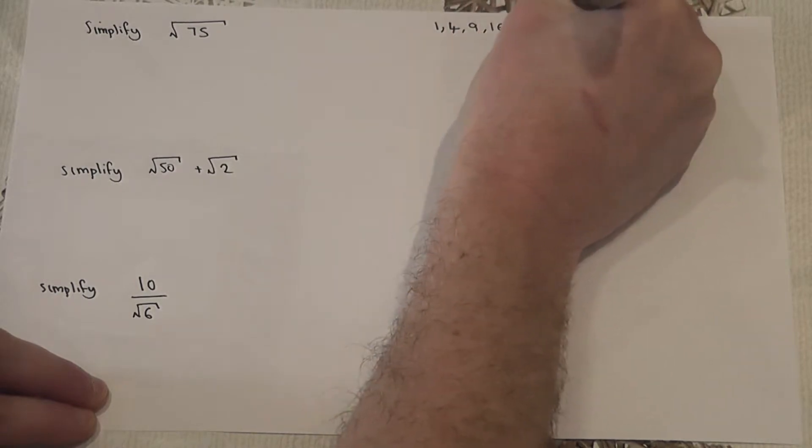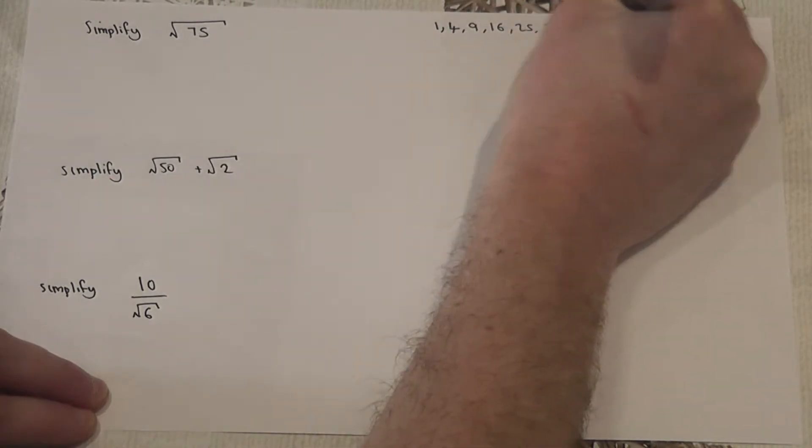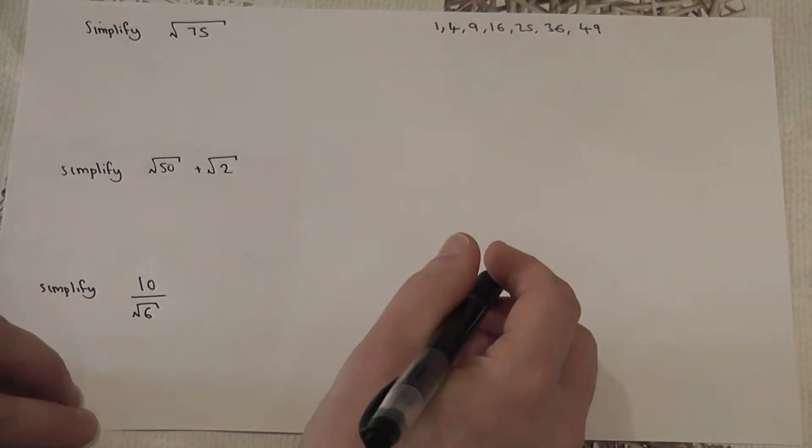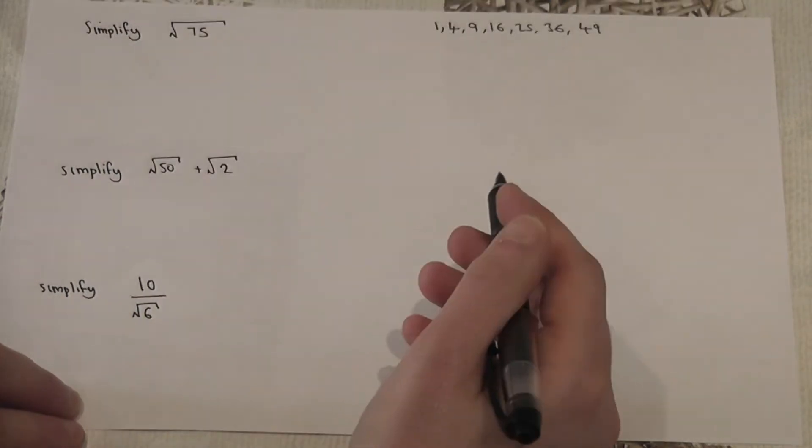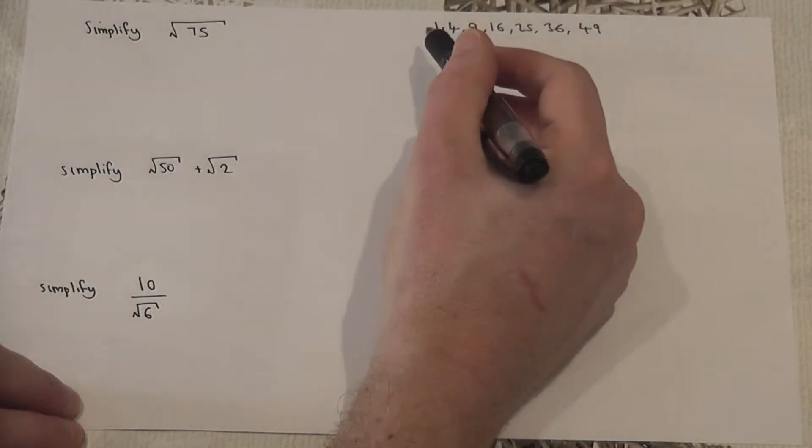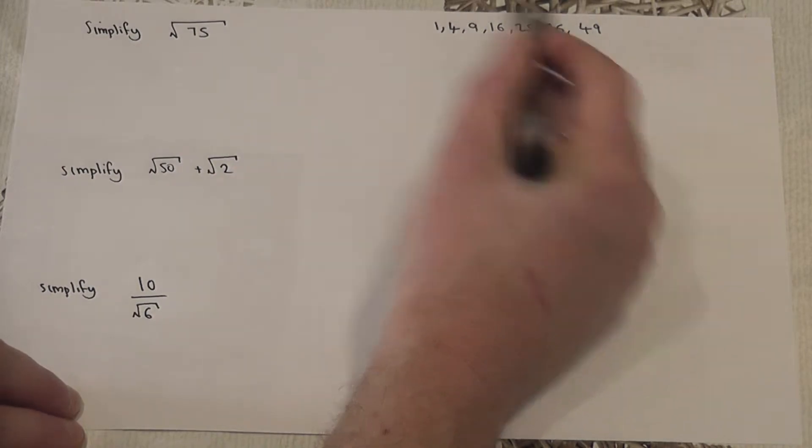Now we write down the first six or seven square numbers. When you're asked to simplify the surd, the real question you're being asked is what's the largest possible square number which goes into 75.